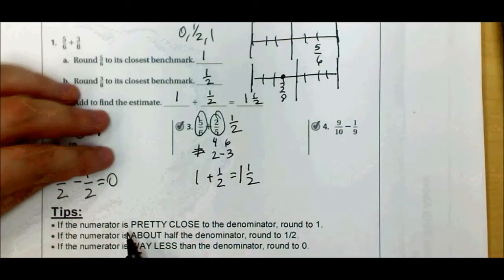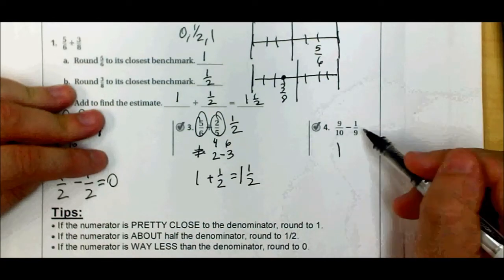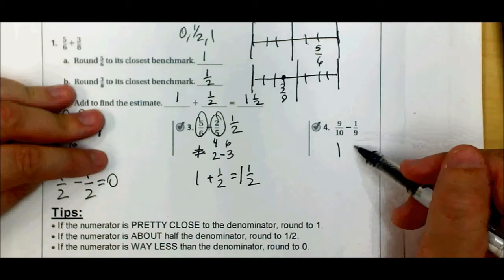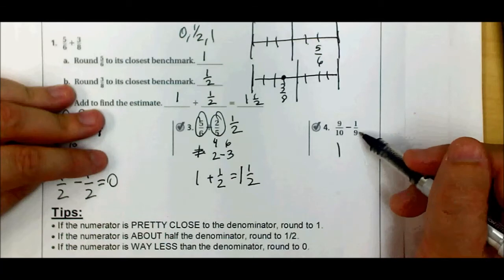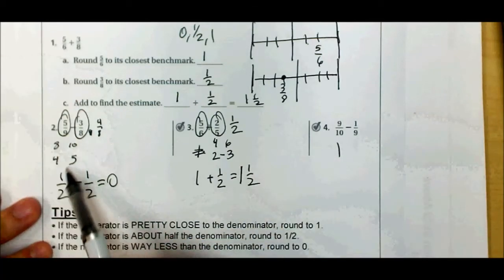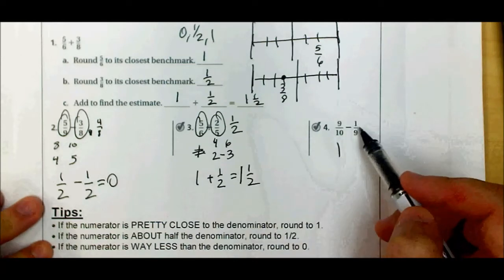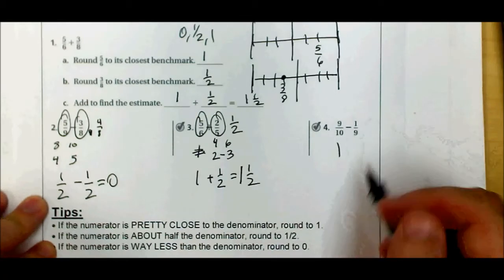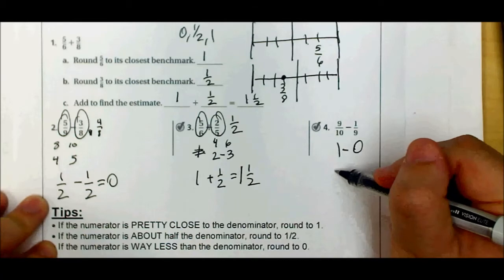Number four: nine-tenths. The numerator is very close to the denominator, so I know I can make that a one. One-ninth is very close to zero — there's a one in the numerator. Half of nine is between four and five, and one is not close to that, so it's not close to half. The numerator is definitely not close to nine, so this would be zero. One minus zero is one.